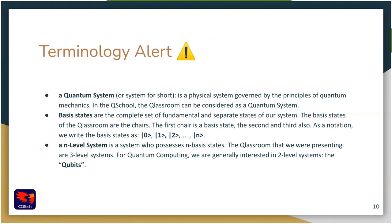Let's look at the correct terminology to describe things in the Q School and the quantum world more formally. I will call a quantum system — or system for short — any physical system governed by the principles of quantum mechanics. The classroom is our quantum system. The basis states are the complete set of fundamental and separate states of our system. In the classroom, the basis states are the chairs — the first, second, and third. We write basis states using ket notation: ket zero, ket one, etc.